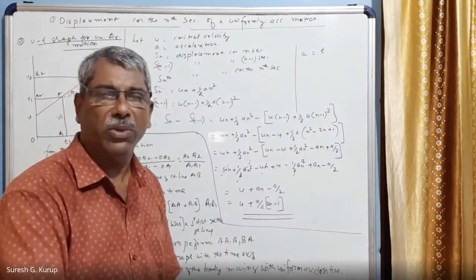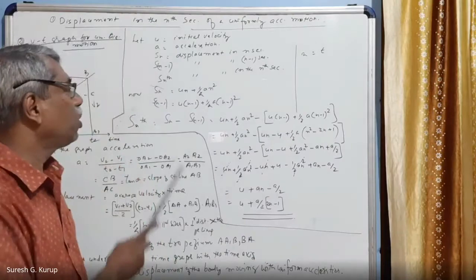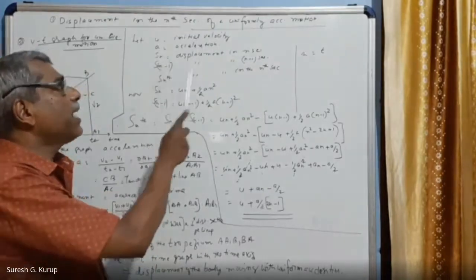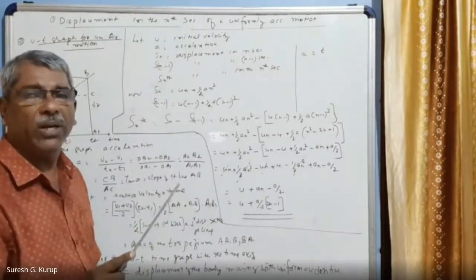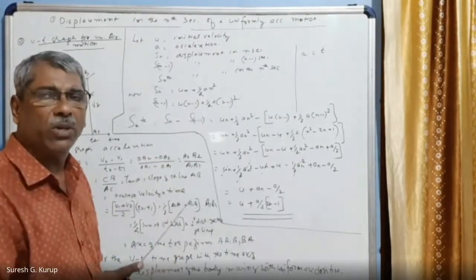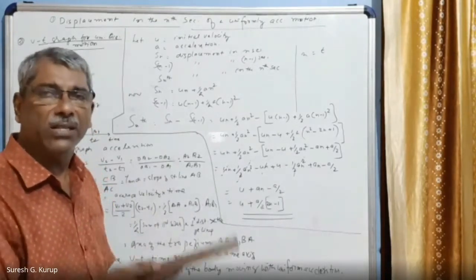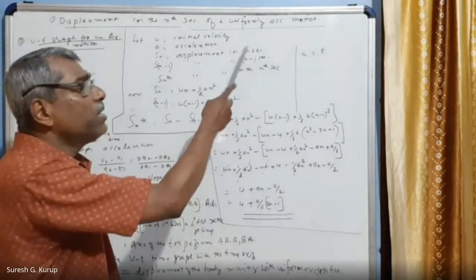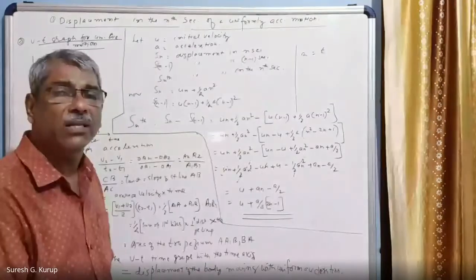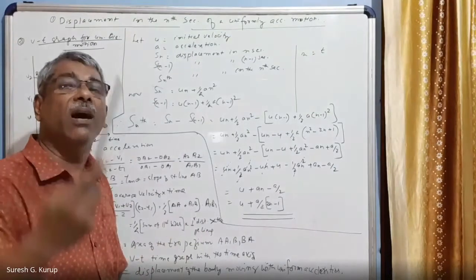For the displacement in the last second, there is a formula we can derive. Here u is the initial velocity of the body, a is the acceleration, S_n is the displacement of the body in total n seconds, and S_(n-1) is the displacement of the body in total n minus one seconds. So S_n is the displacement in the nth second — if n is 10 and n minus one is 9, what is the displacement in the 10th second is what we calculate.